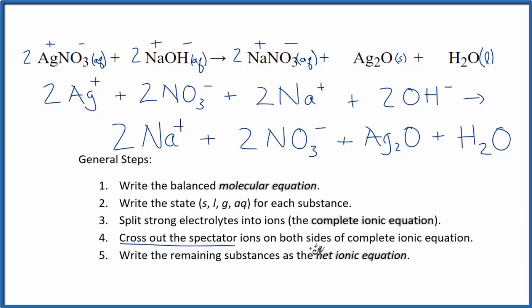What we can do now is cross out spectator ions. These are ions that appear on both sides of this complete ionic equation. Essentially they haven't changed. So you see we have reactants here, two nitrate ions. We also have two nitrate ions in the products.